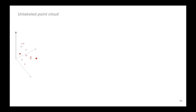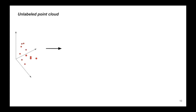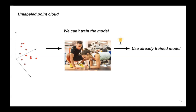But how can we get the latent space from the model if we don't have labeled data and therefore cannot train the model? The following approach was proposed: why don't we take an already trained model on completely different data and put our data through it, then pull out the latent space and push it further into the one-class SVM classifier? It was decided to use the PointNet model.